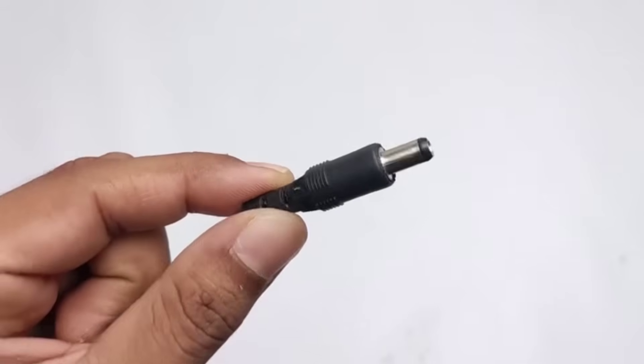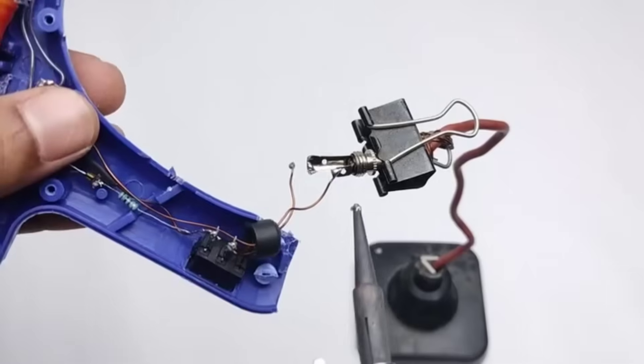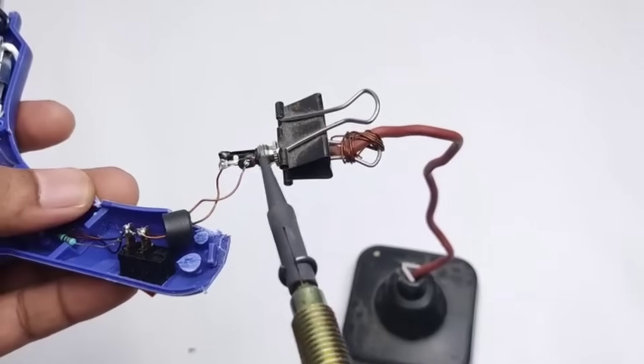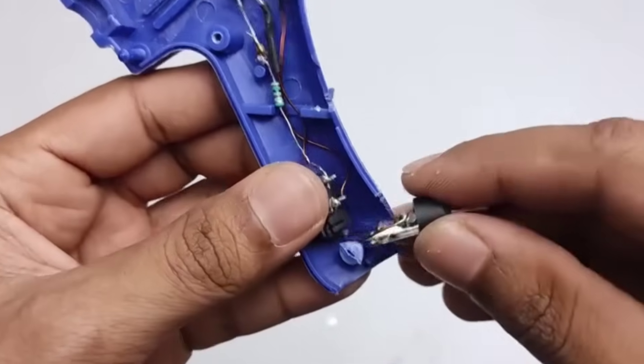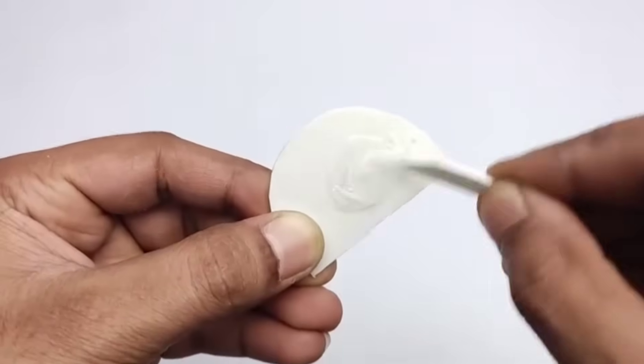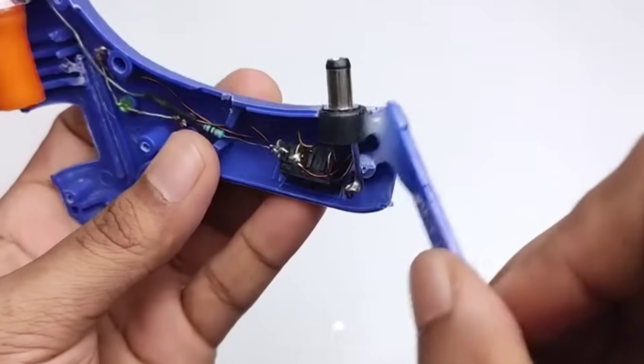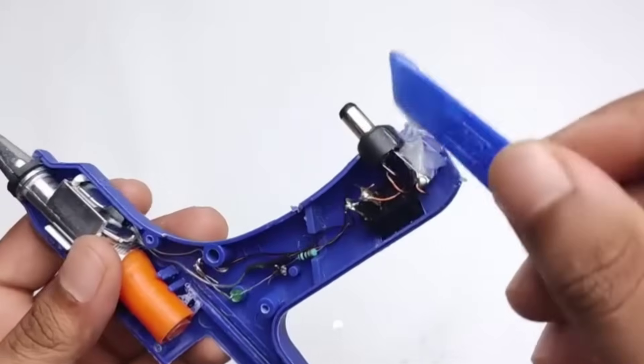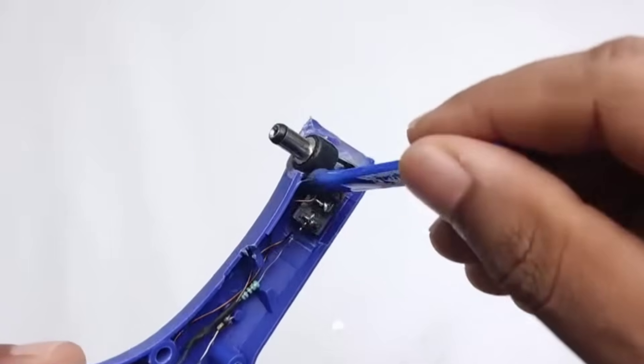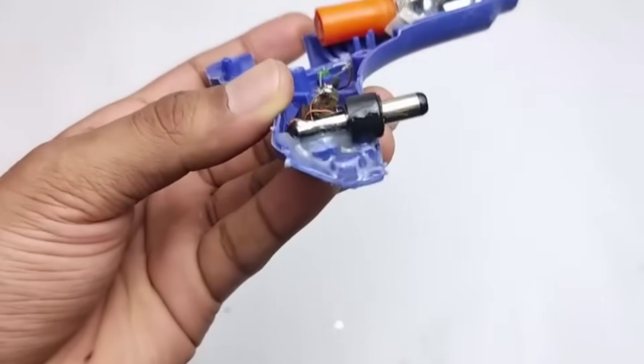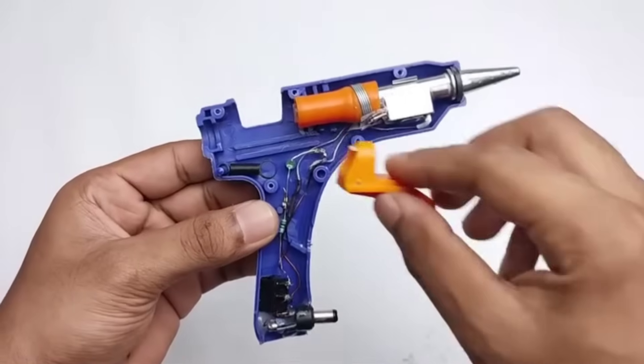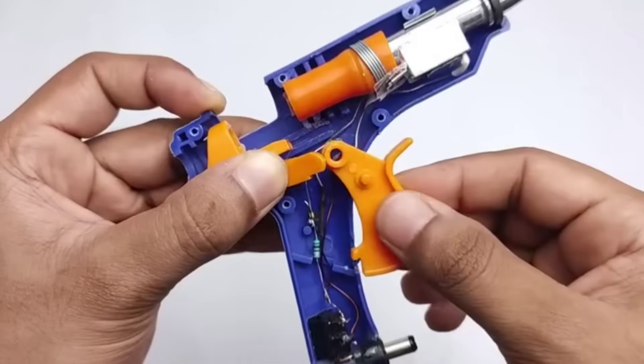For these two wires that you can see here, we need to attach a male socket by carefully soldering it in place. This will ensure a secure and reliable connection, allowing the wires to be easily connected or disconnected as needed. We use a bond tie to securely fasten it together. This holds the socket in place on the glue gun, keeping everything neat, stable, and firmly positioned, ensuring that the socket won't move or come loose during use.